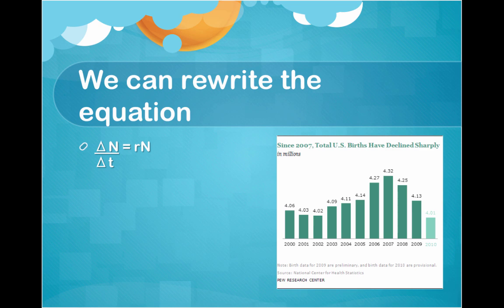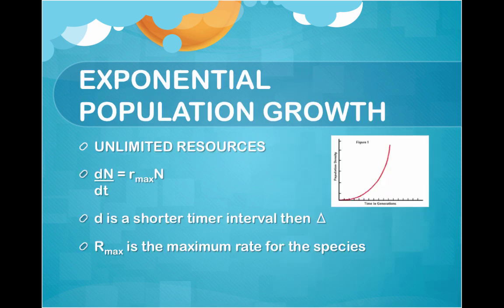If a population has unlimited access to resources, population increase is called exponential population growth. The equation is dN/dt equals r-max times N, where r-max is the maximum rate for the species.